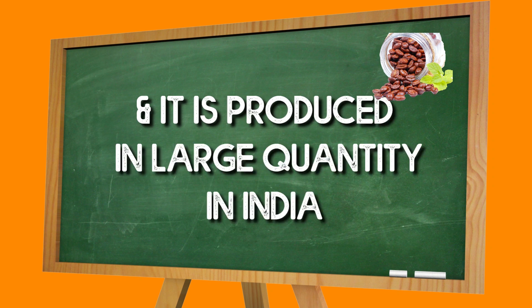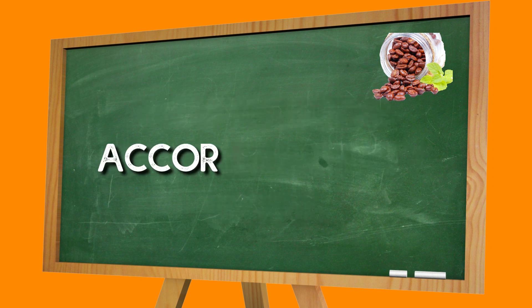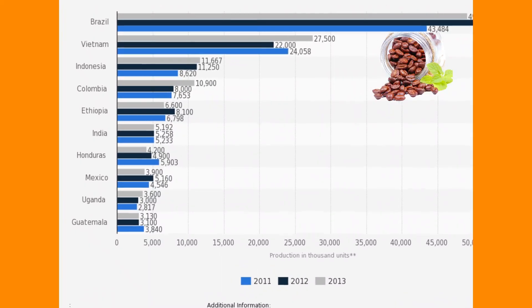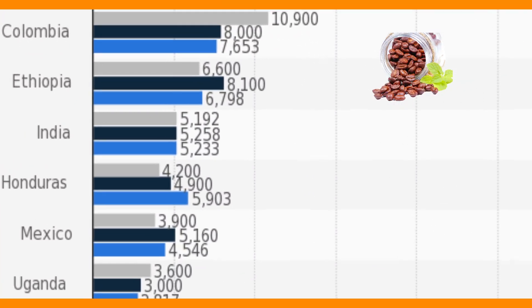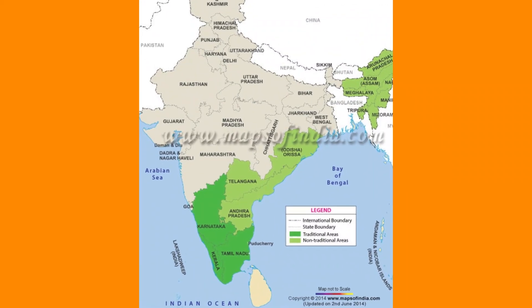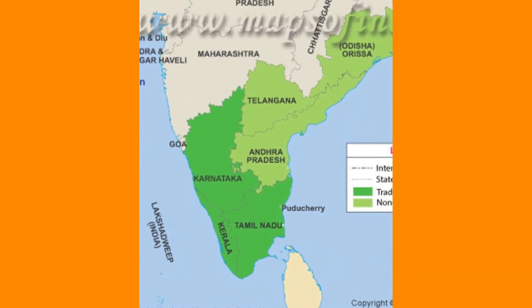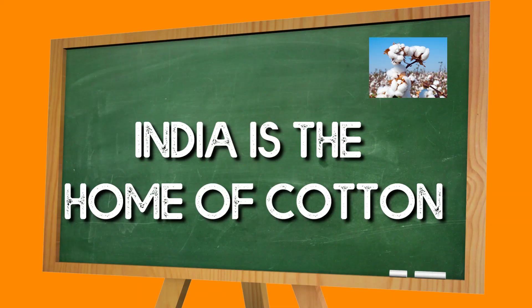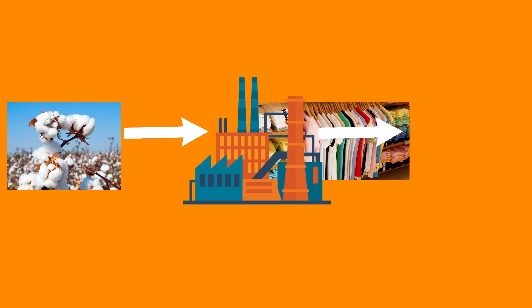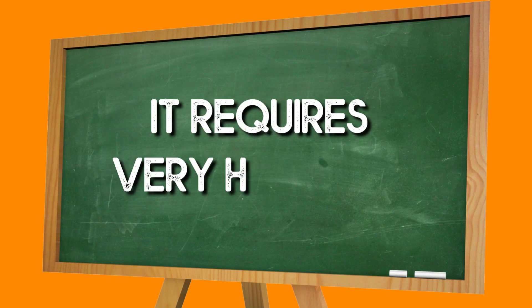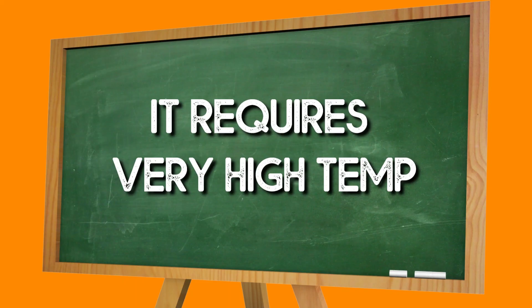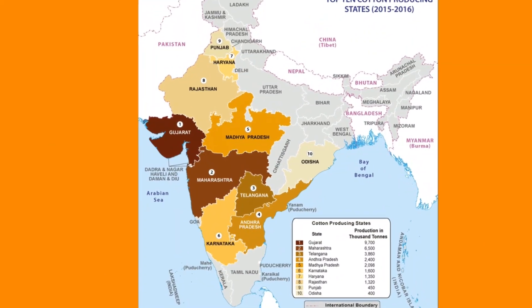Number 4 is Coffee. Indian coffee, particularly Arabica variety, is in high demand all over the world and is produced on a large scale in India. As of 2008, India produced 3.2% of the world's coffee. The major coffee producing states are Karnataka, Kerala, and Tamil Nadu. Number 5 is Cotton, which is an important raw material for the textile industry. Cotton requires low rainfall and high temperature, and mainly grows in Gujarat and Maharashtra.